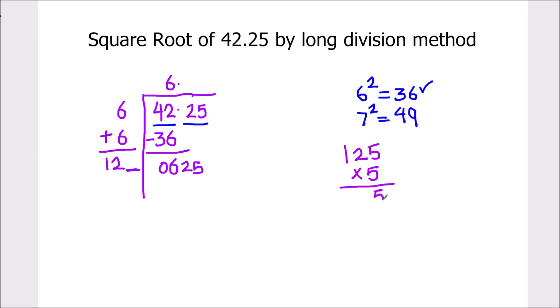5 times 5 is 25, 2 is carried over. 5 times 2 is 10, 10 plus 2 is 12, 1 is carried over. 5 times 1 is 5, 5 plus 1 is 6. So we got 625.